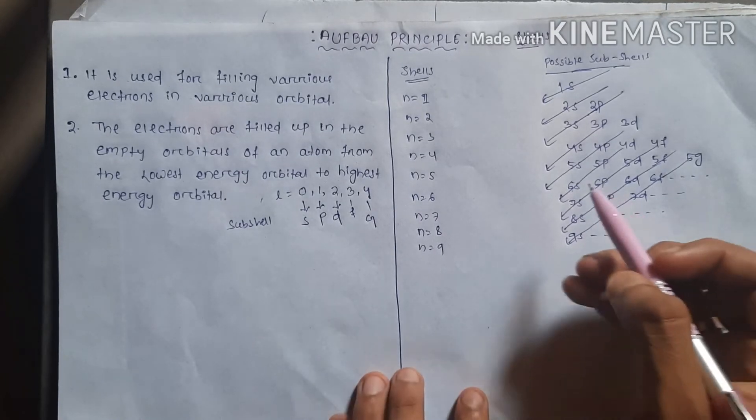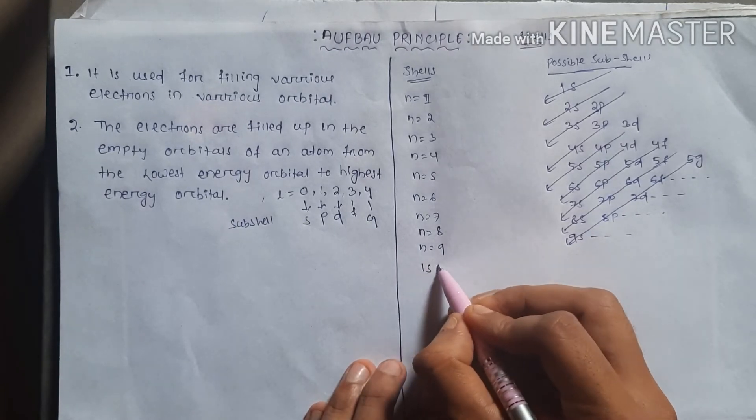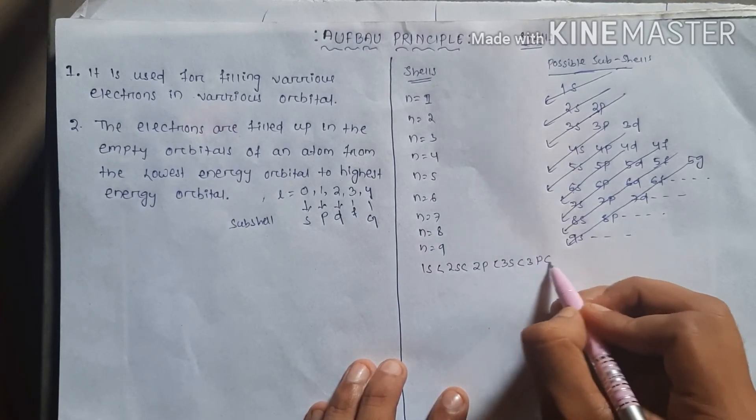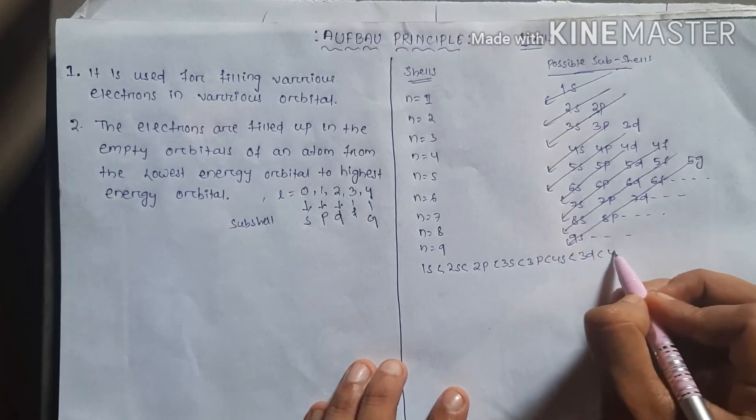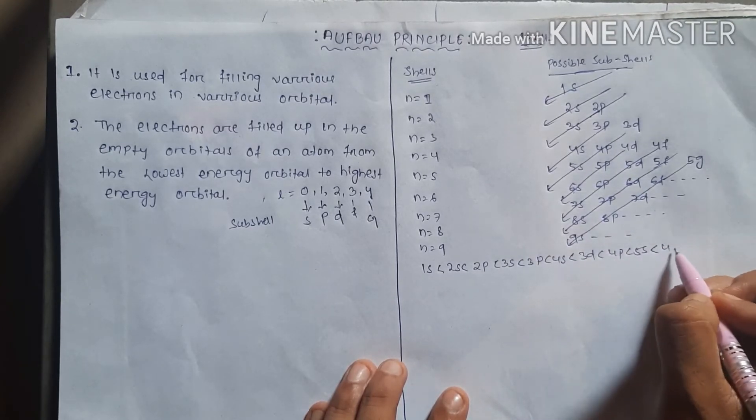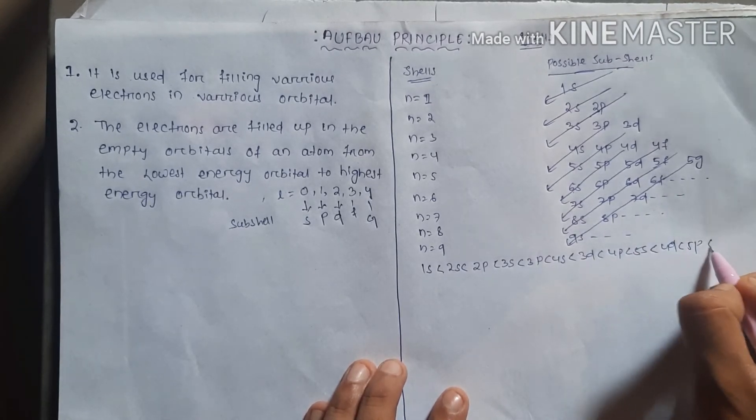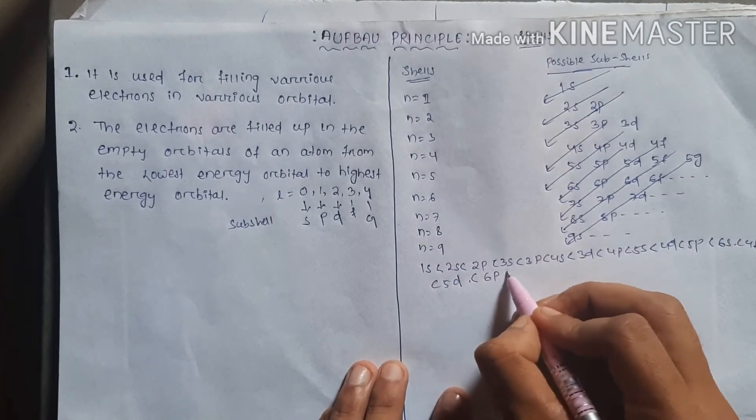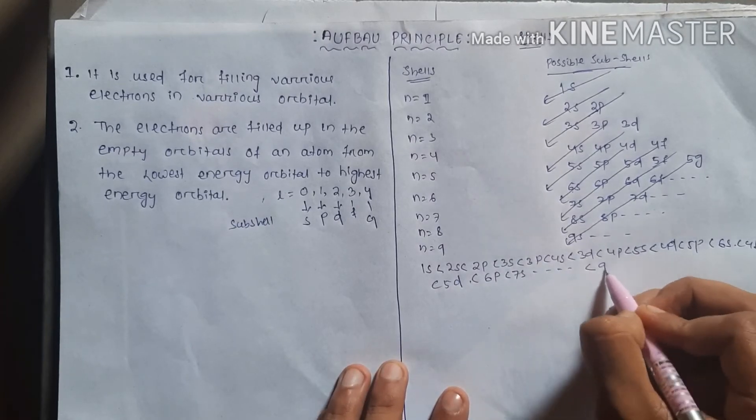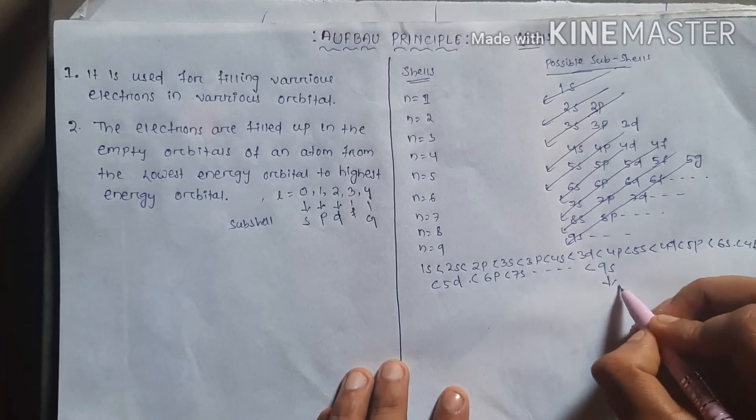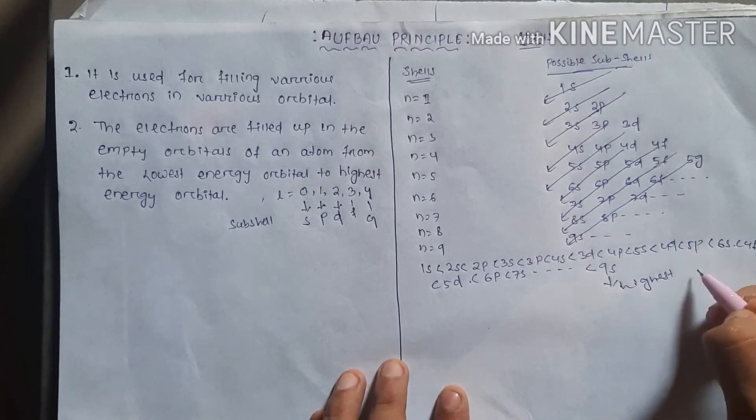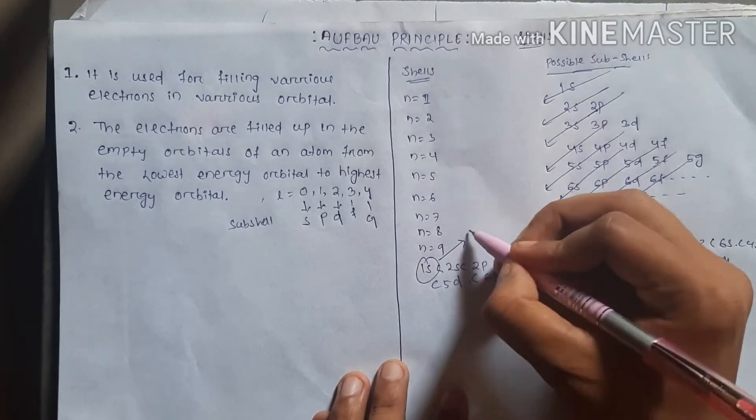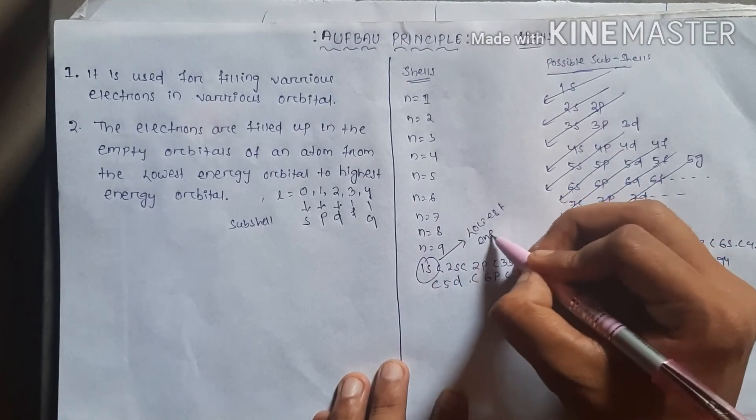So we can arrange this from the energy value lowest to highest: 1S, then 2S, then 2P, then 3S, then 3P, then 4S, then 3D, then 4P, then 5S, then 4D, then 5P, then 6S, then 4F, then 5D, then 6P, then 7S and so on up to 9S. Which is the highest energy orbital? Since it is highest, then it is highest energy orbital. The first is lowest energy orbital.